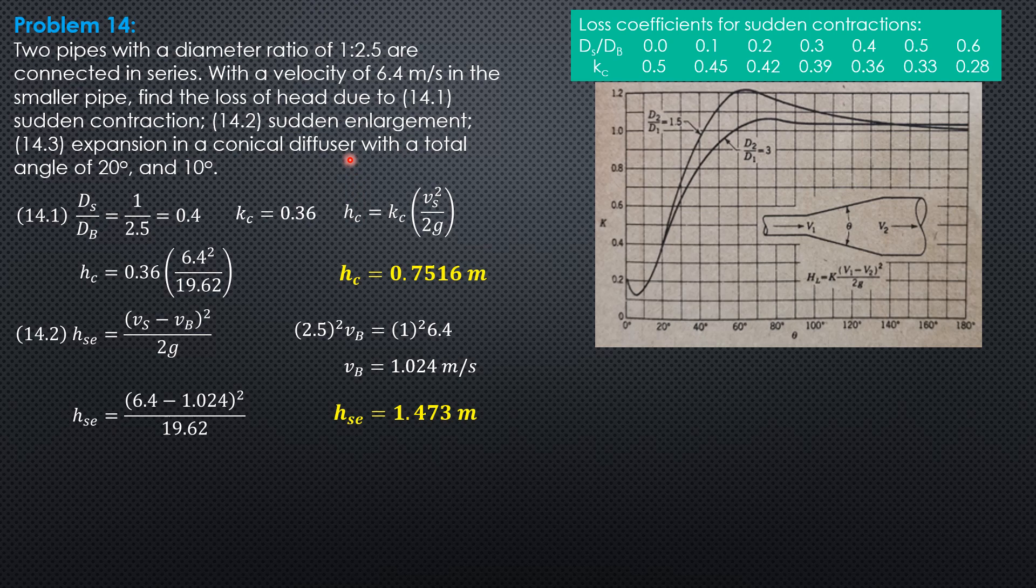For conical diffusers, the formula is certain coefficient k, loss coefficient k times this quantity velocity in the smaller minus velocity in the bigger quantity squared over 2g.